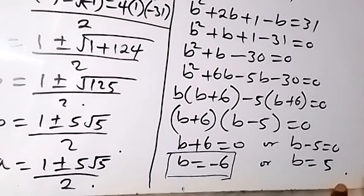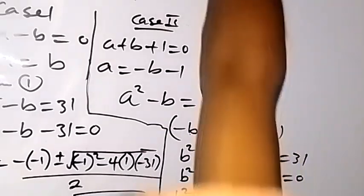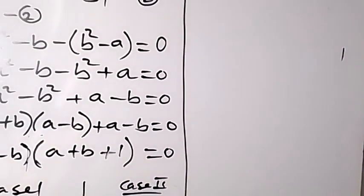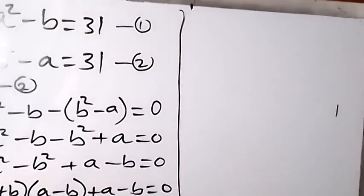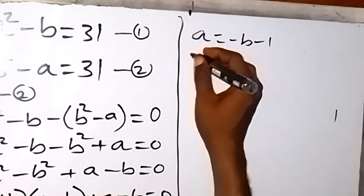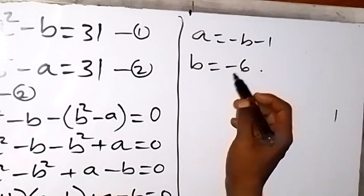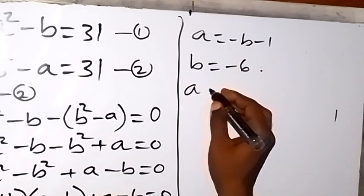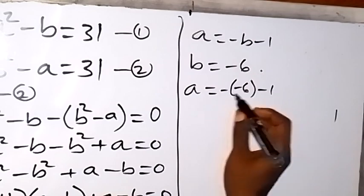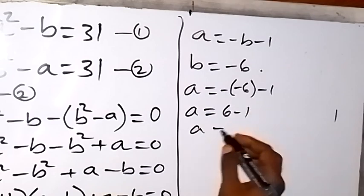We find corresponding a values using a equals minus b minus 1. When b equals −6, a equals −(−6) − 1 equals 6 − 1, so a equals 5.